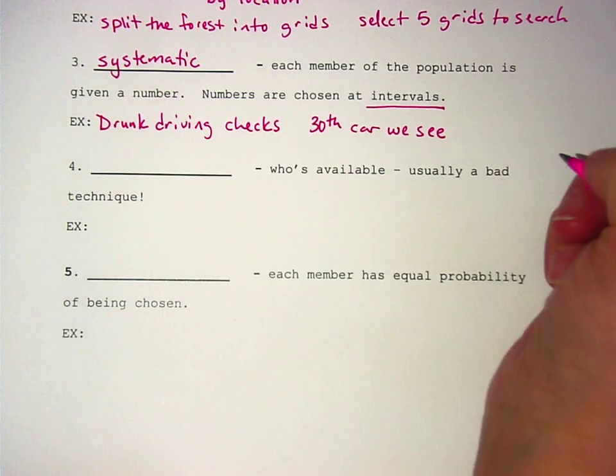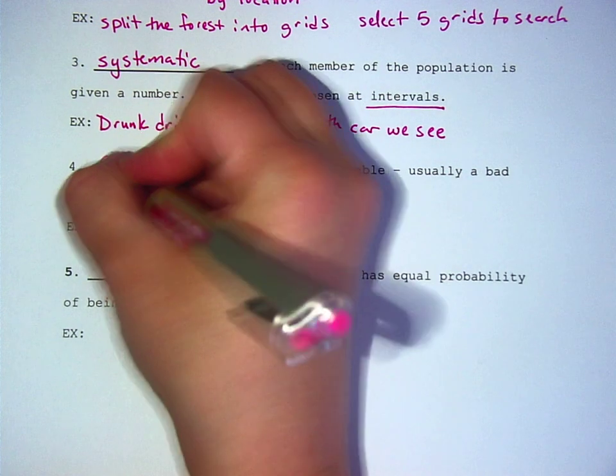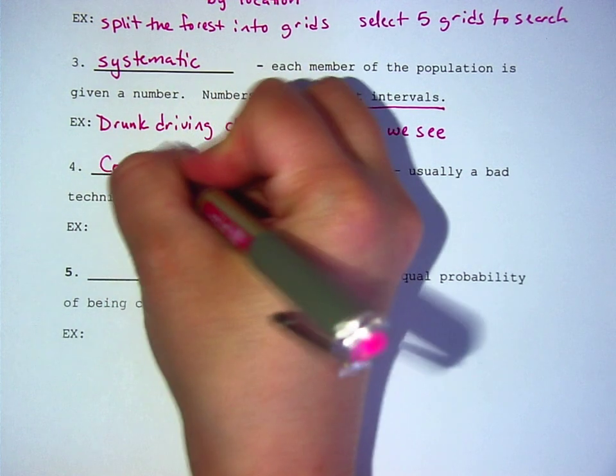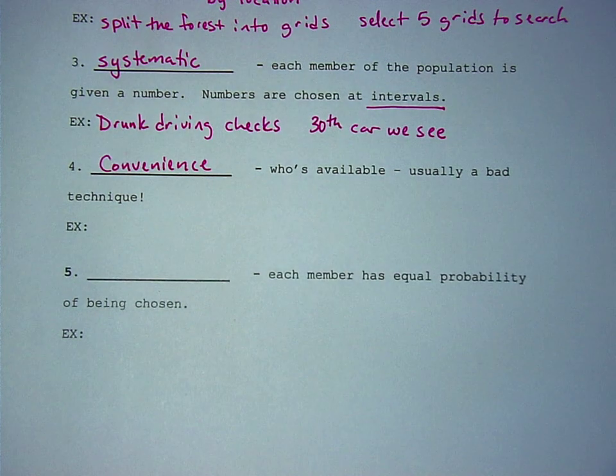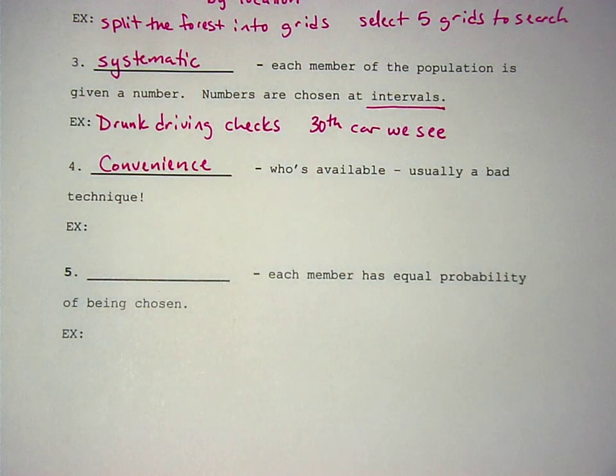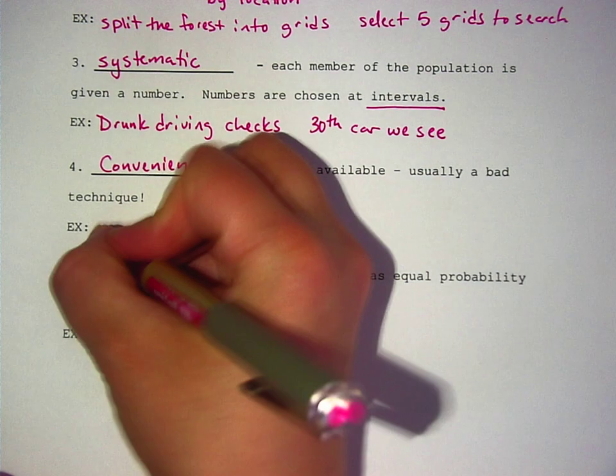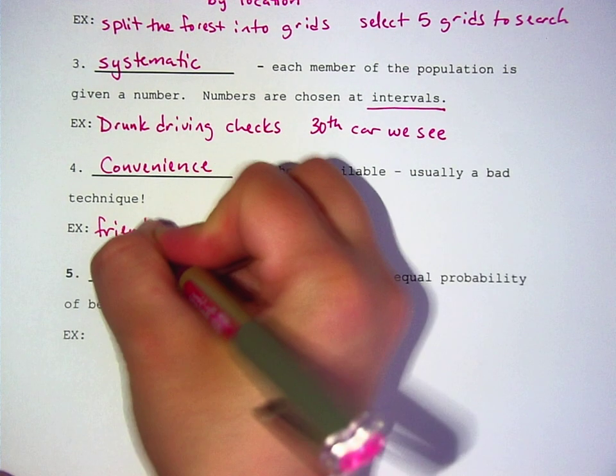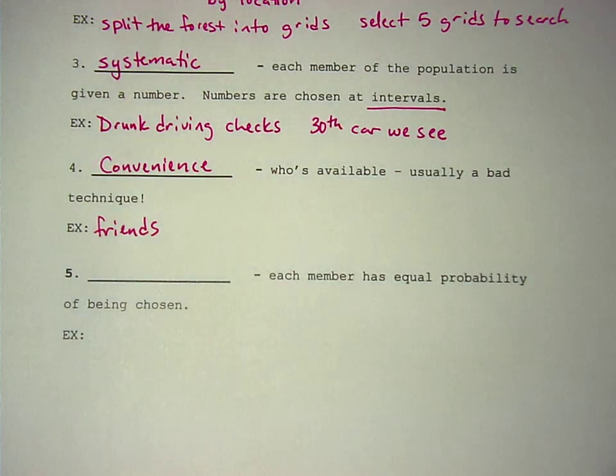Next is, it's called convenience sampling. You ask who's available, which is usually a bad technique. An example of this would just be asking your friends to participate in a study. Why do you think it would be a bad idea just to ask your friends?